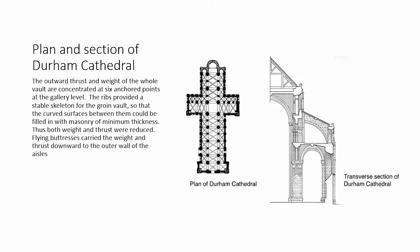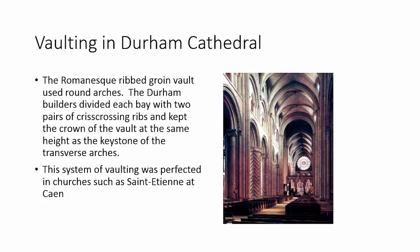Here is the plan and section. The plan is our bird's eye view looking down. In the transverse section you can see the buttressing on the outside and the side aisle. Above the side aisle is the nave. Both weight and thrust are reduced, and the buttresses carry the weight downward to the outer wall of the aisle. The ribbed groin vault in the Romanesque uses round arches, dividing each bay with two pairs — perfected at Saint-Étienne Caen.